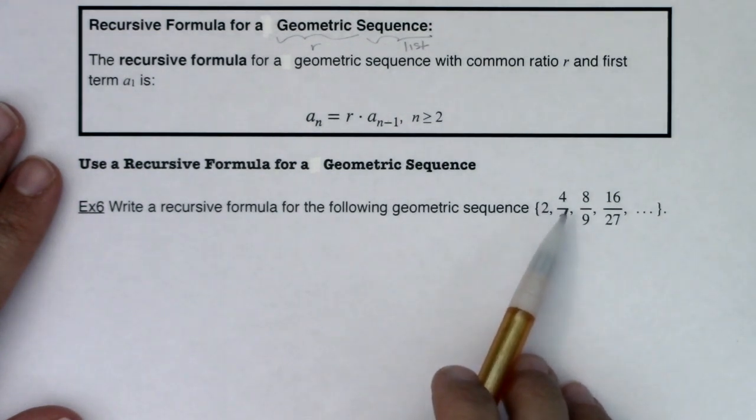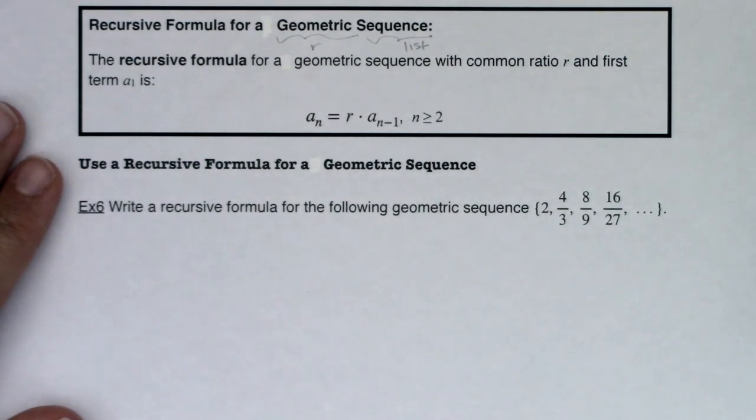Let's write this recursive formula for the following geometric sequence. It looks like we've got 2, 4 thirds, 8 ninths, 16 27ths.